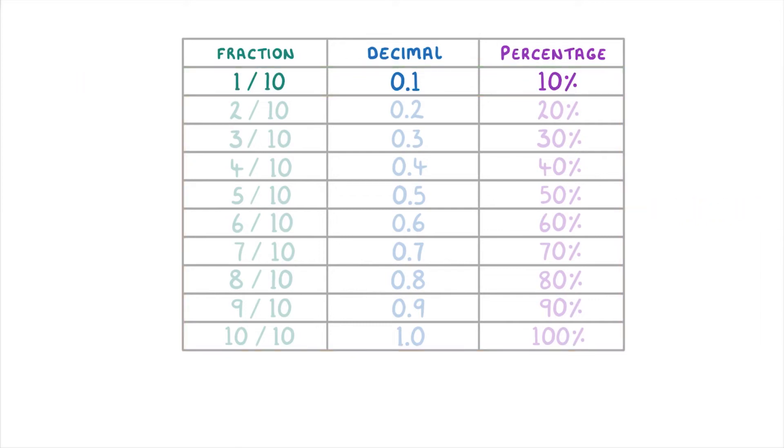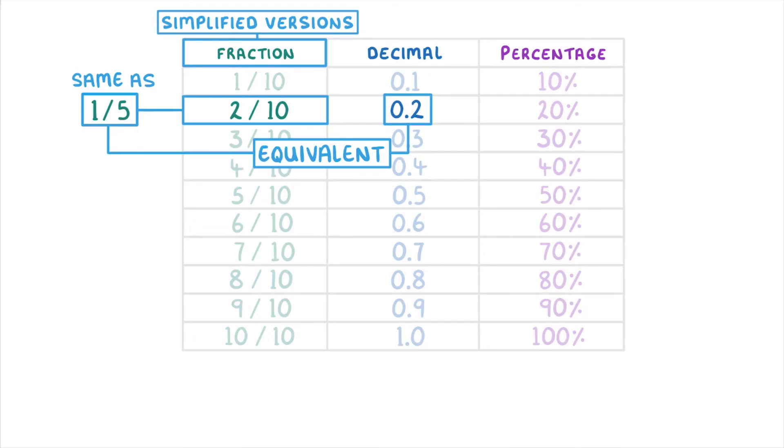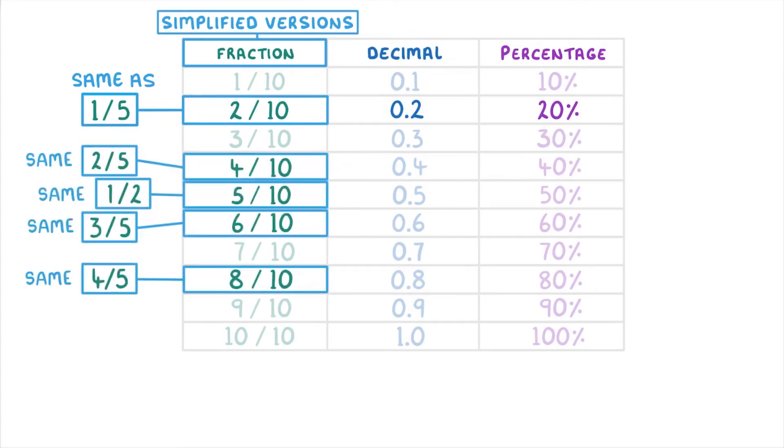One thing you need to watch out for, though, is the simplified versions of fractions. For example, 2 over 10 is the same thing as 1 over 5. So 1 fifth is equivalent to 0.2 and 20%. And the same goes for these other simplified versions.